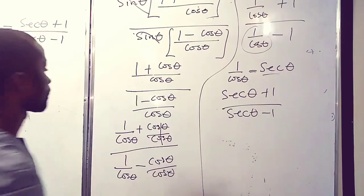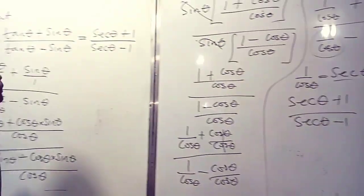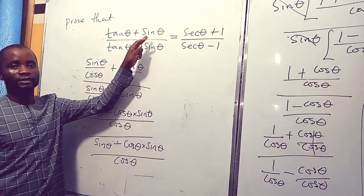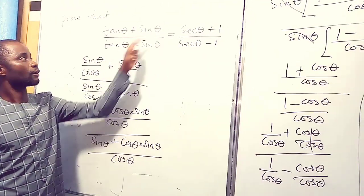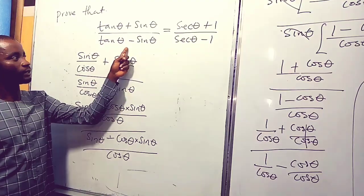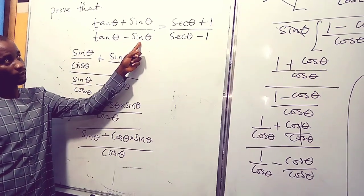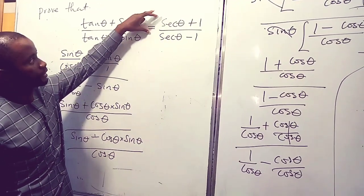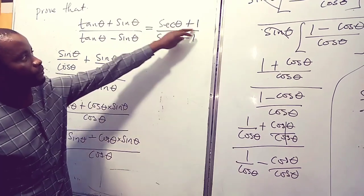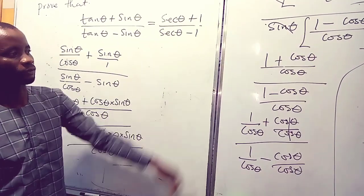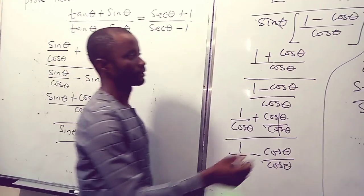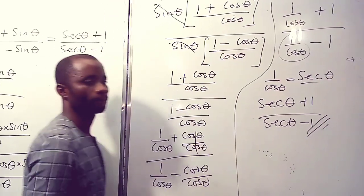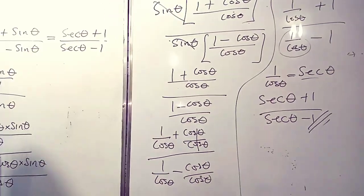Let's go back to our original question: tan theta plus sin theta over tan theta minus sin theta equals sec theta plus one over sec theta minus one. We have been able to achieve sec theta plus one over sec theta minus one. That is proven.